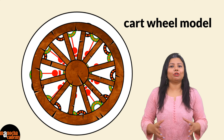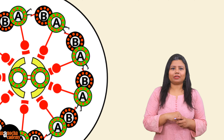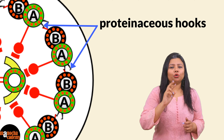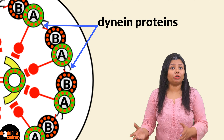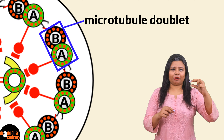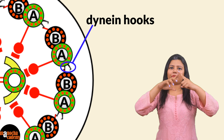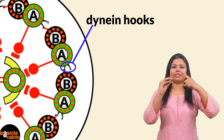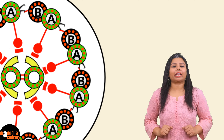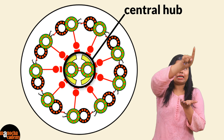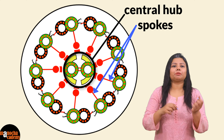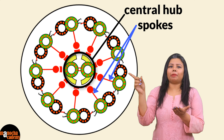From every A subunit and B subunit, two proteinaceous hooks appear made up of dynein proteins, which have ATPase activity. The dynein protein projects from one A-B doublet and attaches to the B subunit of the next doublet, using ATP to allow movement of the entire flagellar periphery. From the center, nine spokes appear — like spokes of a wheel — that keep the central hub attached to the peripheral doublets.